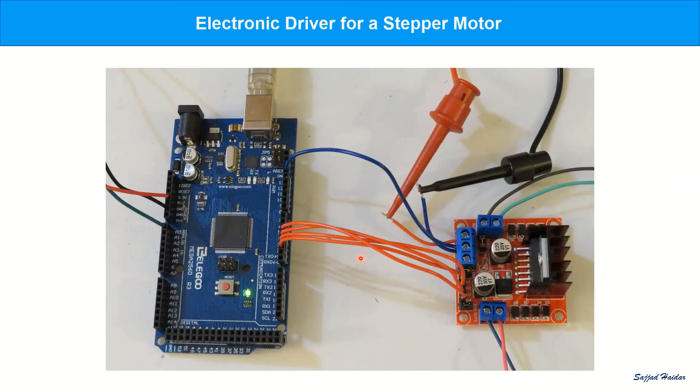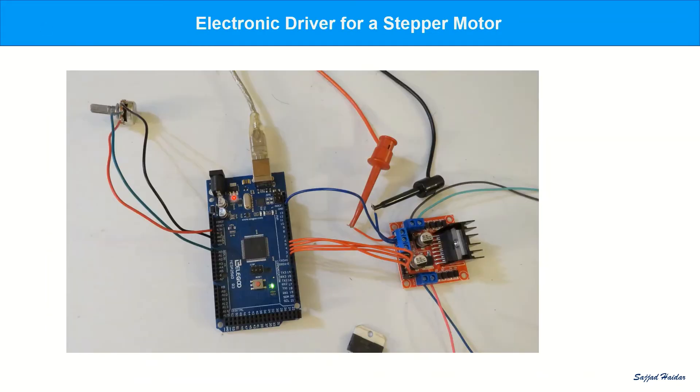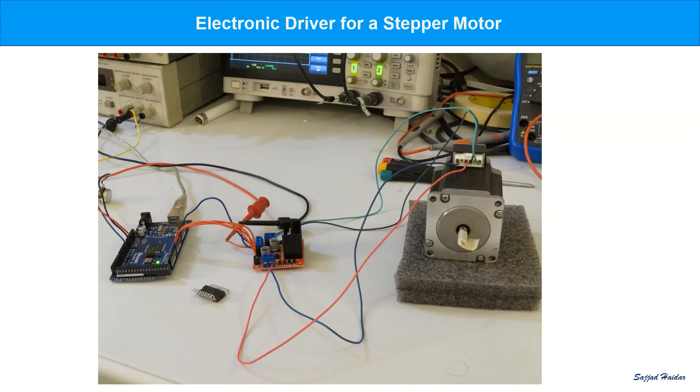This is the circuit in action. And this circuit shows a potentiometer is also used to control the frequency of the pulses, which controls the speed of rotation of the motor. Connected motor is shown here.